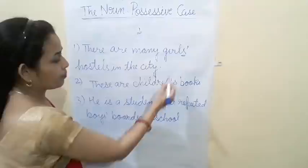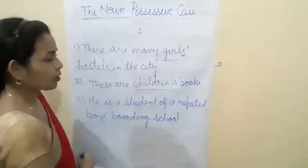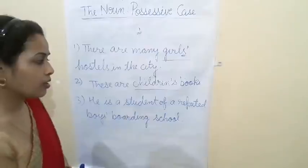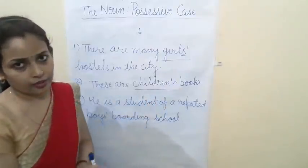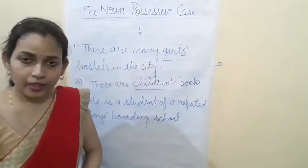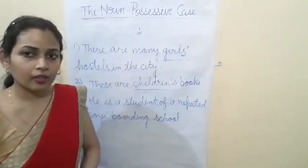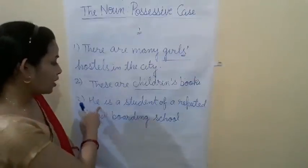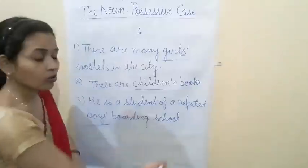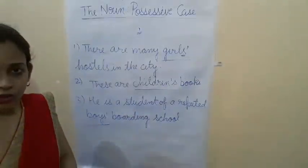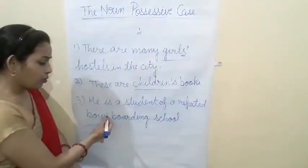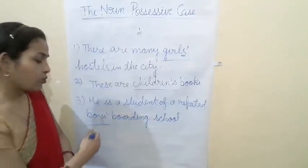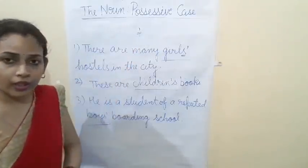Another example: 'These are children's books' — children is a plural noun, but when we change it to possessive case we put apostrophe sign with S because the last letter is not S. Similarly, 'He is a student of a reputed boys' boarding school' — here 'boys' already ends in S, so we put only the apostrophe sign. When last letter is S, we put only apostrophe sign; when we don't get last letter S, we write apostrophe sign with S.